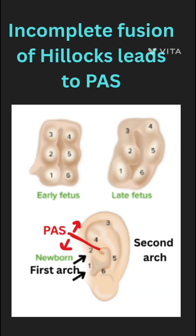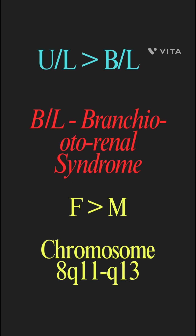The pinna develops from six auricular hillocks, and incomplete fusion of these hillocks will lead to a blind-ended preauricular sinus. The estimated incidence is 0.1 to 0.9 percent in the general population, more often unilateral, and occasionally bilateral forms are inherited.